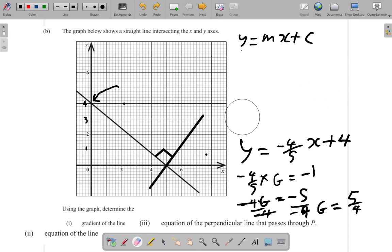Now, what we have so far for this new line is a gradient. So Y equals 5 over 4X plus C for the new line. We need to find out what C is.